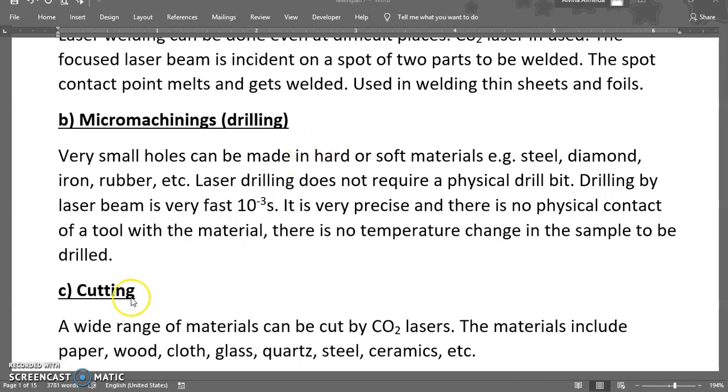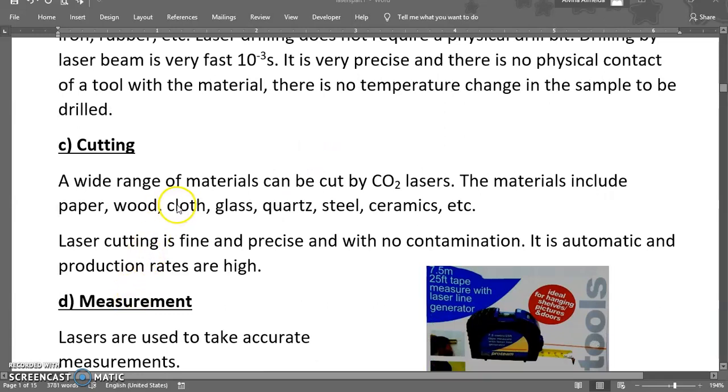Next is cutting. A wide range of materials can be cut by using carbon dioxide lasers. The materials include paper, wood, cloth, glass, cork, steel, ceramic, etc. Laser cutting is fine and precise with no contamination. It is automatic and the production rates are very high.